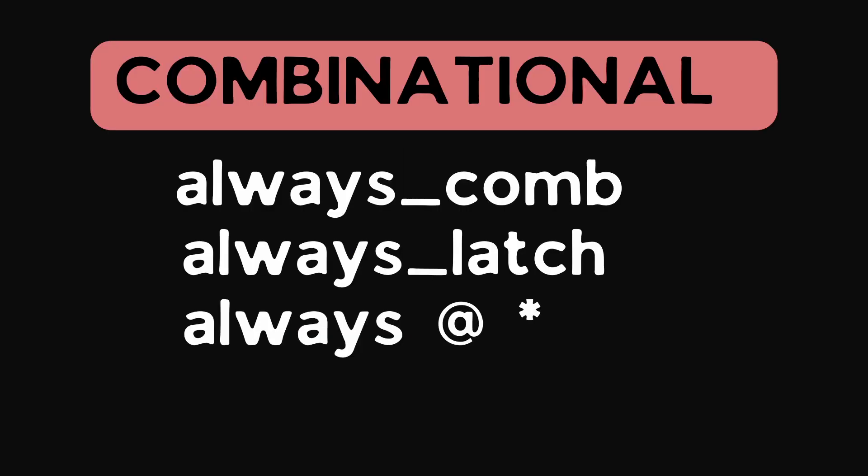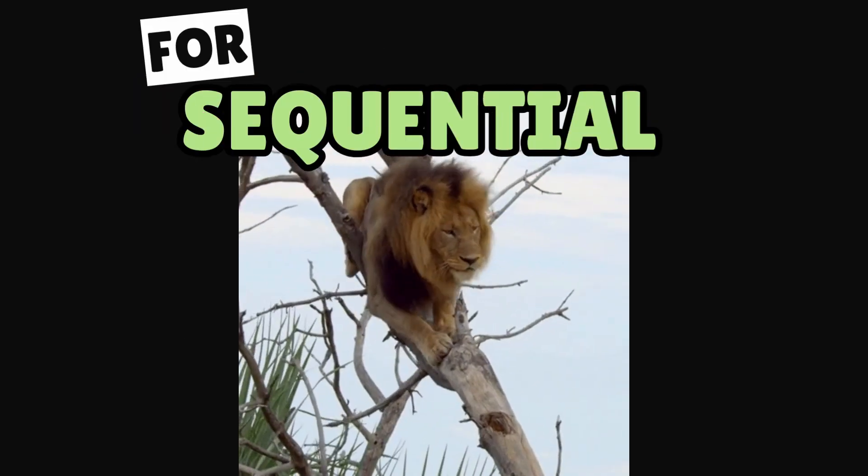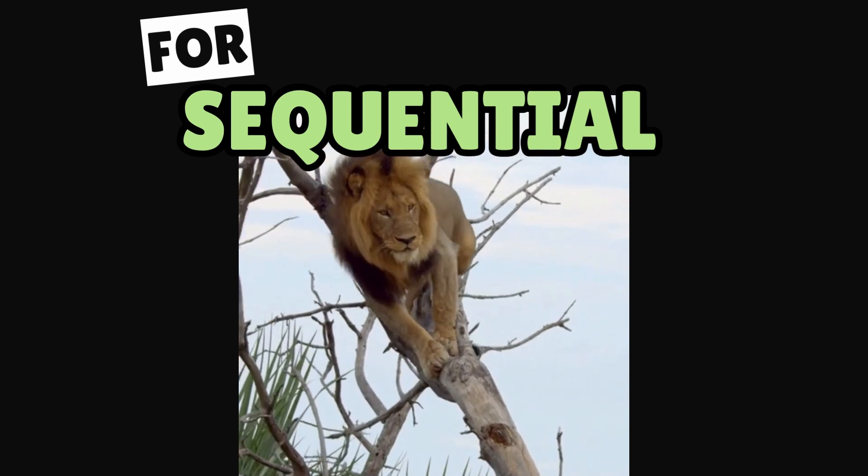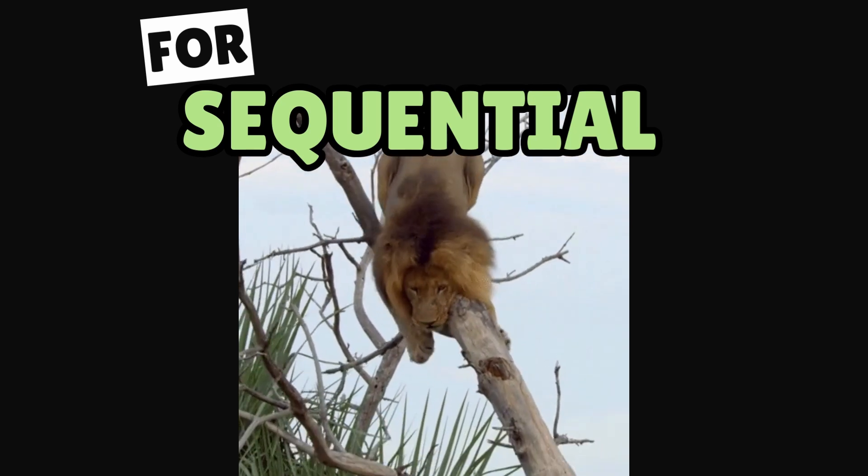But the best practice is to avoid it. When coding combinational logic, you can avoid this by using SystemVerilog always_comb or always_latch blocks or by using Verilog always @*. These blocks will automatically infer sensitivity list, which removes any type of typos or mistakes. When coding sequential logic, we need to be really careful to avoid using operations within a sensitivity list.